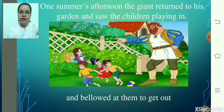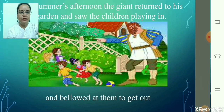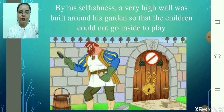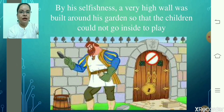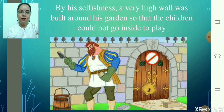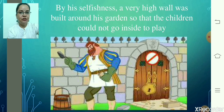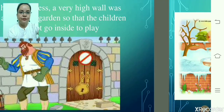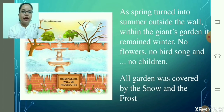He bellowed — that means shouted — at them to get out. When he saw the children he got very angry. By his selfishness, a very high wall was built around his garden so that the children could not go inside to play. He had objection that children should not come to his garden, and he did not want anyone to come to his garden to play, so he shouted at the children and got a wall built around it.